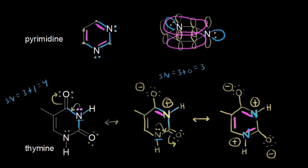Therefore, thymine is aromatic and has extra stability associated with it. Sometimes drawing resonance structures allows you to see possible aromaticity in a molecule. This is an example of a biological aromatic heterocycle — a molecule found in biochemistry that we can analyze using the simple concepts of aromaticity in organic chemistry.